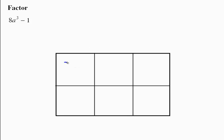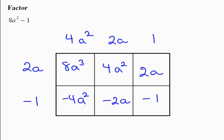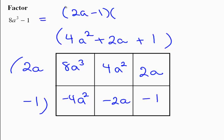Over here we have 8a cubed minus 1. To get 8a cubed, I cubed 2a, which means this has to be 4a squared. I cubed negative 1 to get negative 1, so this has to be negative 1 and 1. Working backwards: this is negative 4a squared, which has to cancel with positive 4a squared. If this is 2a, then this has to be 2a in order to get 4a squared. Negative 2a has to cancel with 2a. So our answer in factored form is 2a minus 1 times 4a squared plus 2a plus 1.